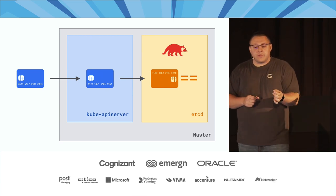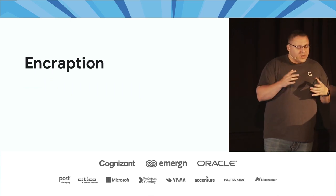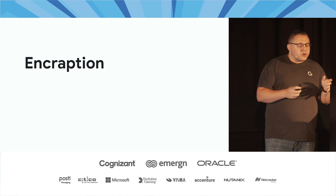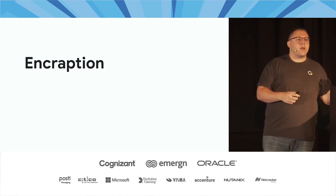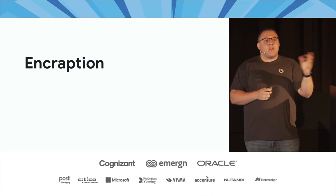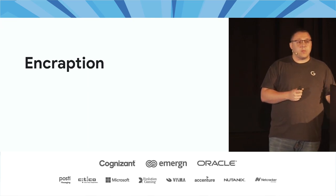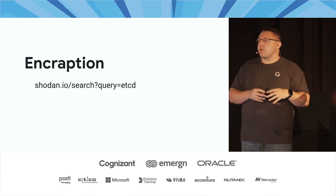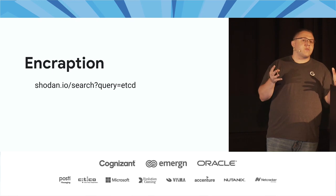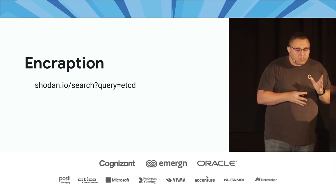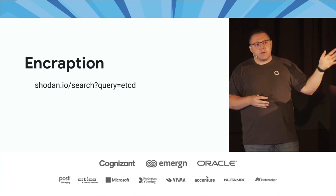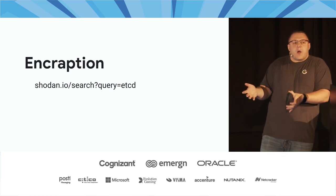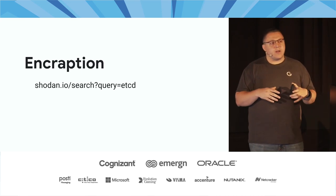I've developed a word for this that I think you'll like: 'encraption' — whenever you confuse encoding and encryption. If you're thinking no one would actually run Kubernetes and put secrets in plain text in etcd — or even if they did, they'd definitely not make their etcd cluster publicly available — I encourage you to check out Shodan, a service that searches the Internet for open ports. Just look for some of the publicly exposed etcd servers out there. You'd be surprised what you can find.